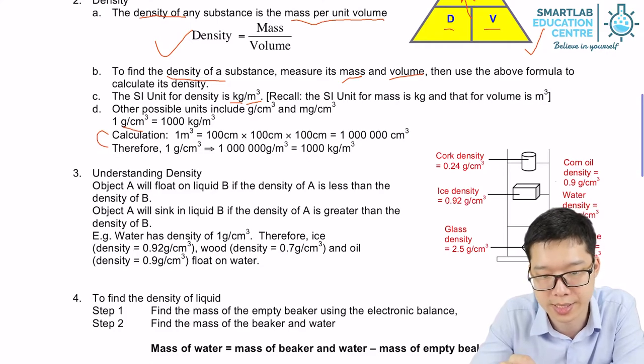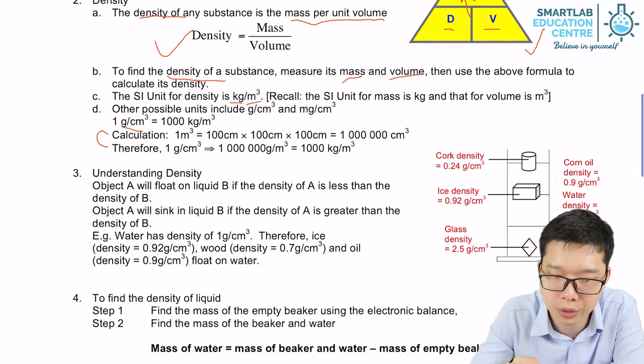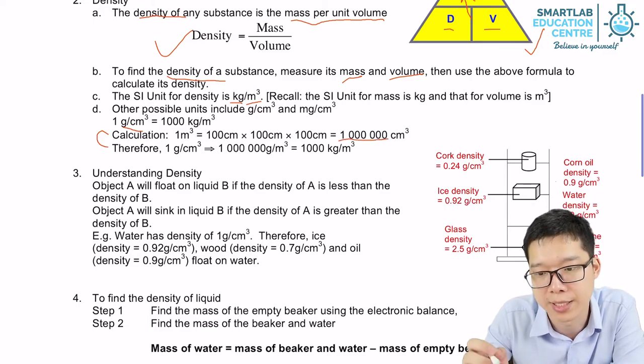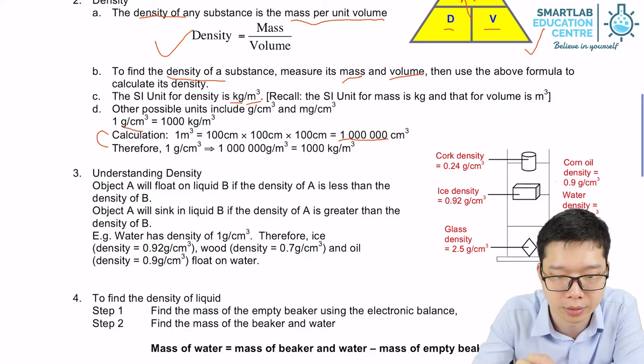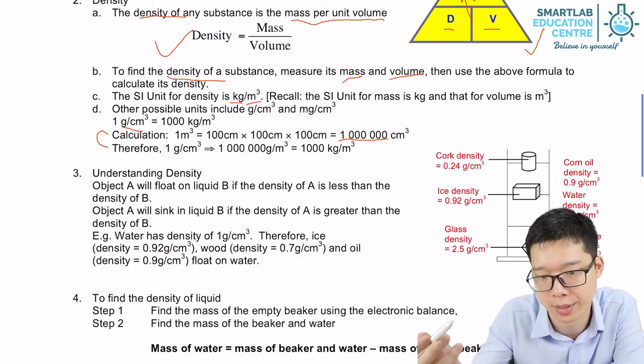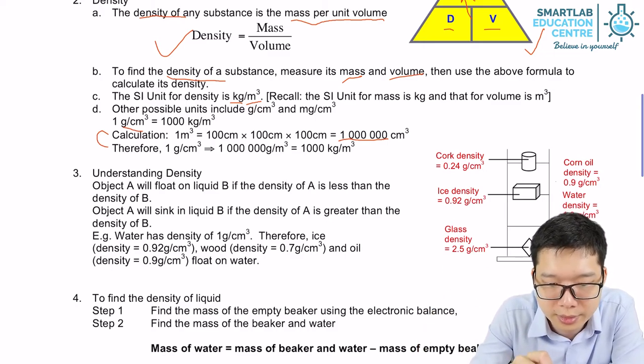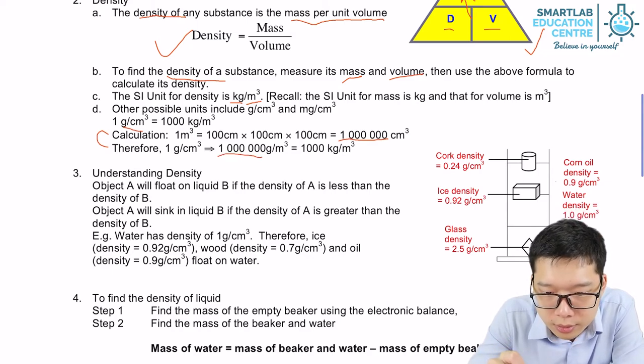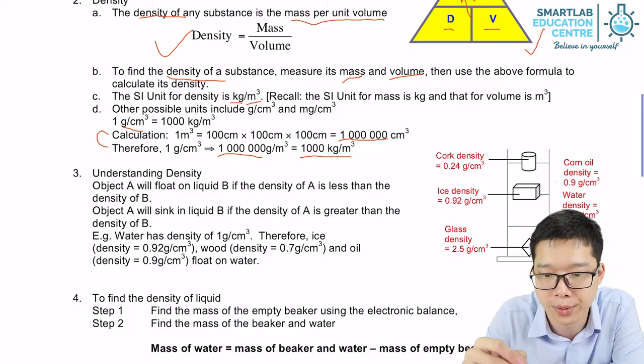So 1 meter equals to 100 cm. Then 1 meter cube equals to 100 cm times 100 cm times 100 cm. So it's 1 million cm cube. And 1 gram is actually 1/1000 kg. 1000 gram is 1 kg. So it's 1,000 kg per meter cube.